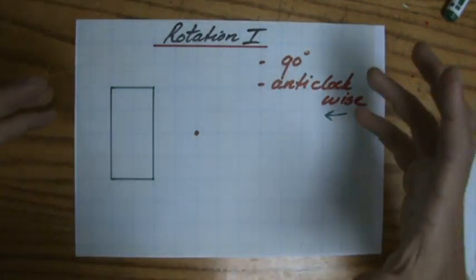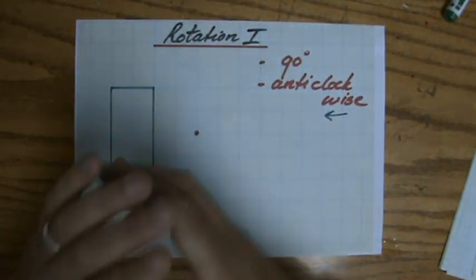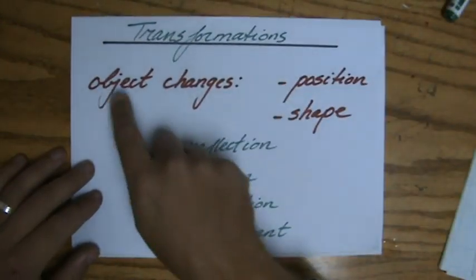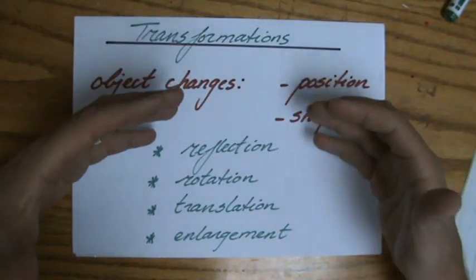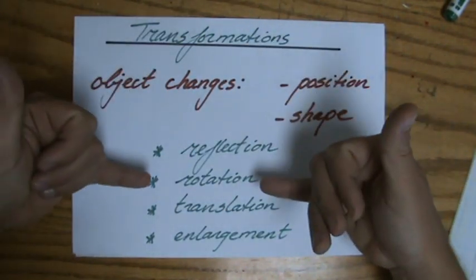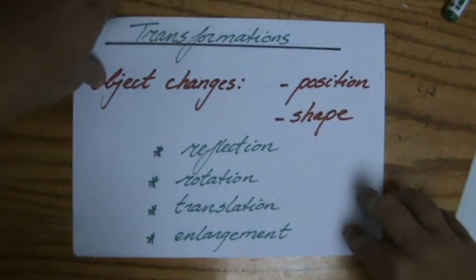It's good of you to join us when we start talking about rotations. A rotation is a type of transformation which makes an object change position or shape. We have done reflections including diagonal mirror lines, we're doing rotations now, translations and enlargements for later.